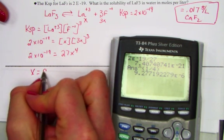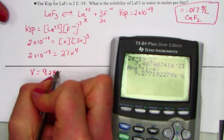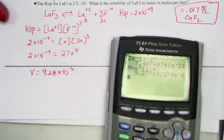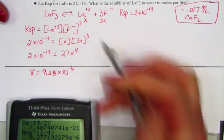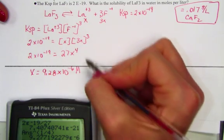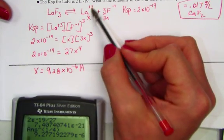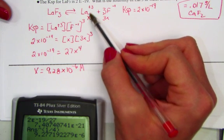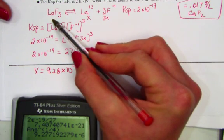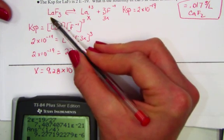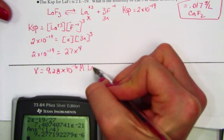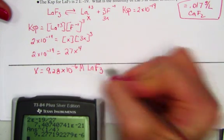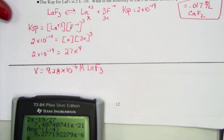And x is now being shown as 9.28 times 10 to the negative 6th molarity, big M. Those brackets are big M. And that's the lanthanum concentration. The x was given to La+3. But notice the stoichiometry is still 1 to 1. So this is also representing LaF3, the concentration of that original salt.